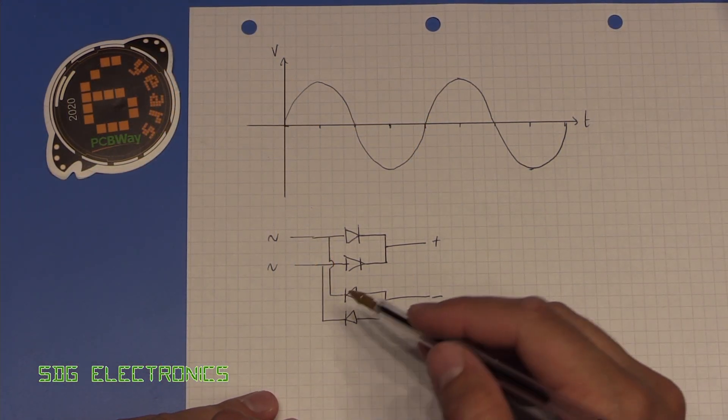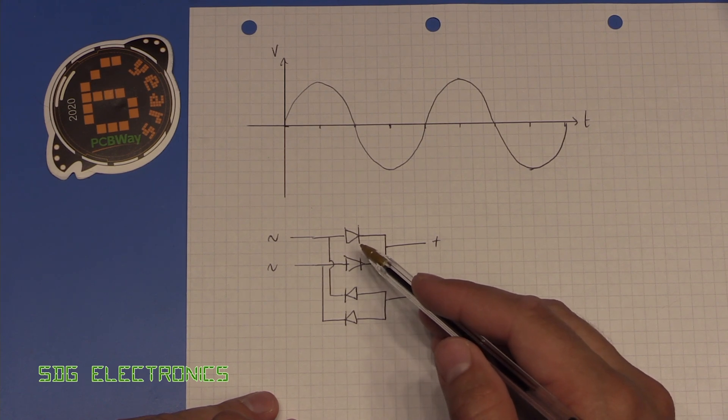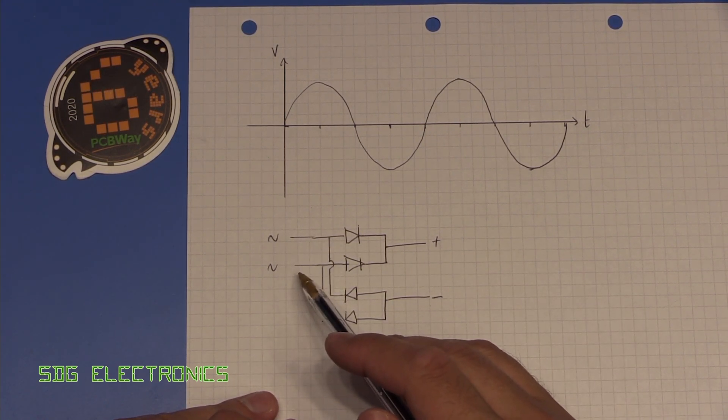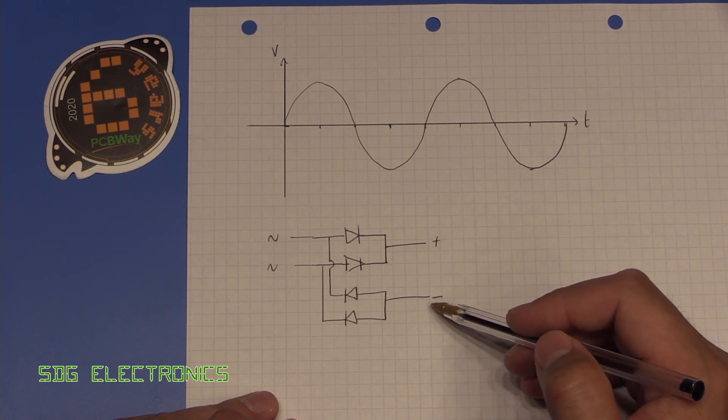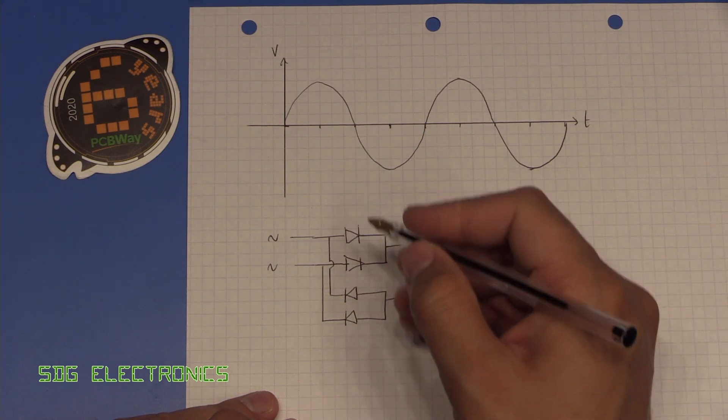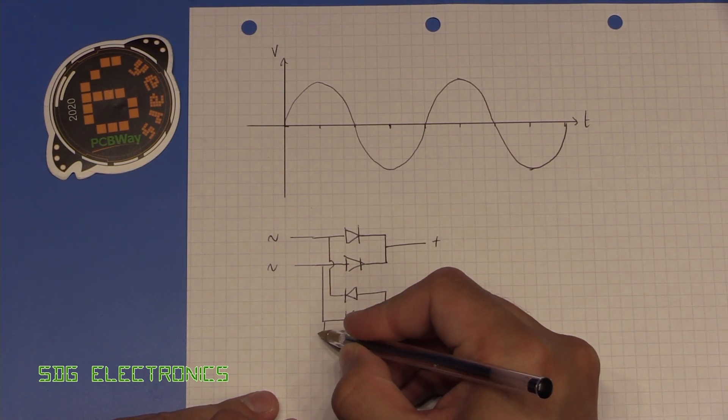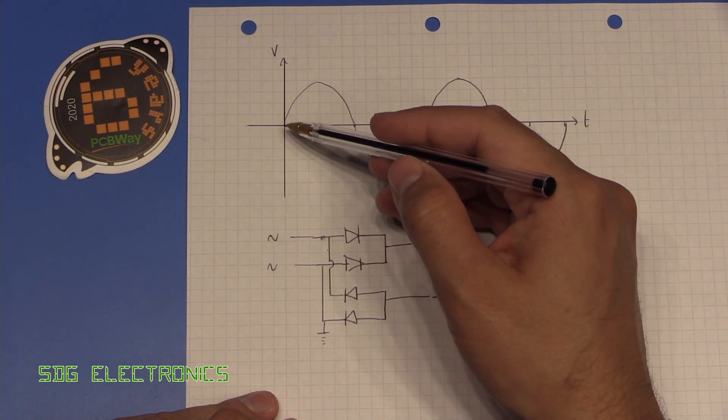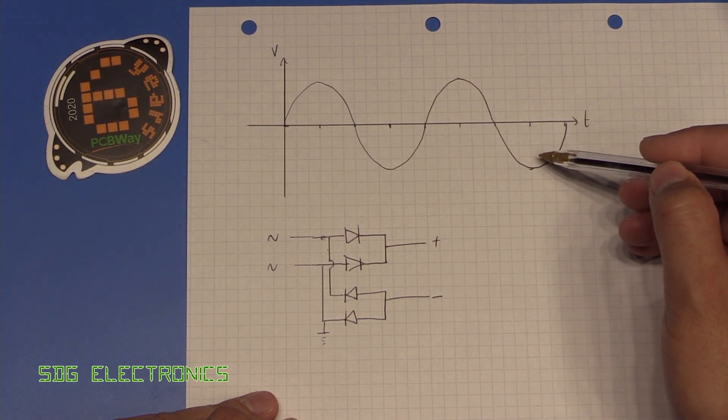So the full bridge rectifier is an arrangement of standard rectifier diodes such that when you put an AC signal into the input terminals, you get a fully rectified DC output on the two output terminals. If you imagine that you have actually grounded one of the legs here and you've probed this point here, what you'd have going in is this AC waveform here.